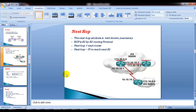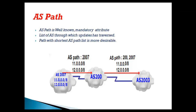By default, whichever route has the least number of AS path hops is considered the best route, unless you use other attributes like local preference or weight to influence path selection. We are not covering the full BGP path selection process here. To verify AS path information, you use the 'show IP BGP' command, which we'll demonstrate in the lab.